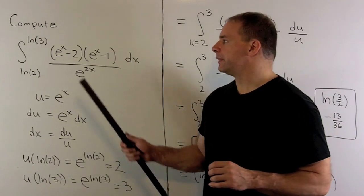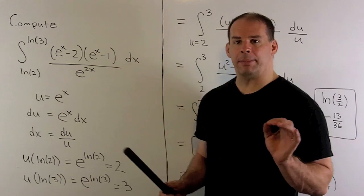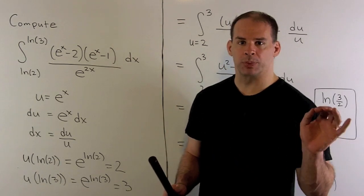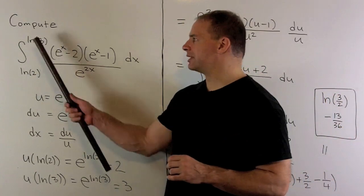Compute the definite integral of e to the x minus 2 times e to the x minus 1 divided by e to the 2x with respect to x over the interval from natural log of 2 to natural log of 3.